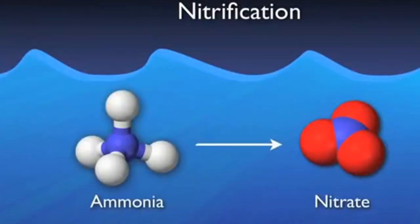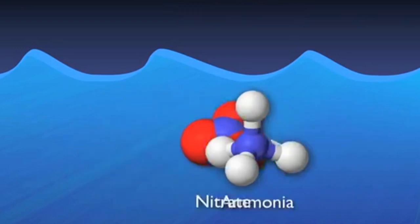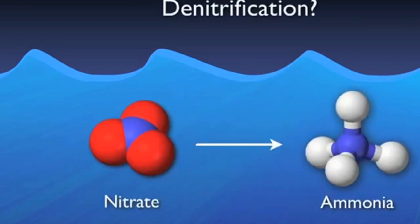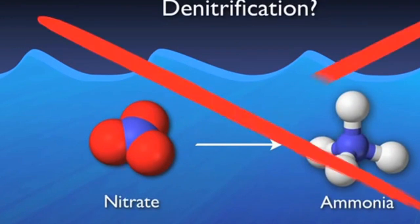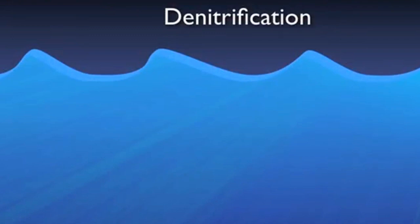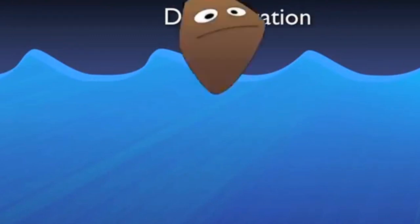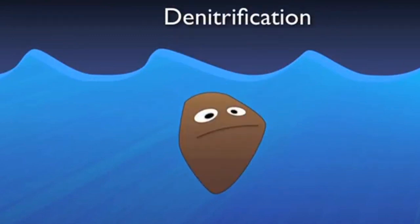The final step in completely removing nitrogen from the system is called denitrification. Since nitrification is converting ammonia to nitrate, one could think that denitrification is simply the reversal of this process. Confusingly, yet fortunately, this is not the case. Denitrification is performed by a specialized heterotrophic bacteria. These bacteria require some pretty specific conditions to perform this step — first of all, they need some food, or BOD.